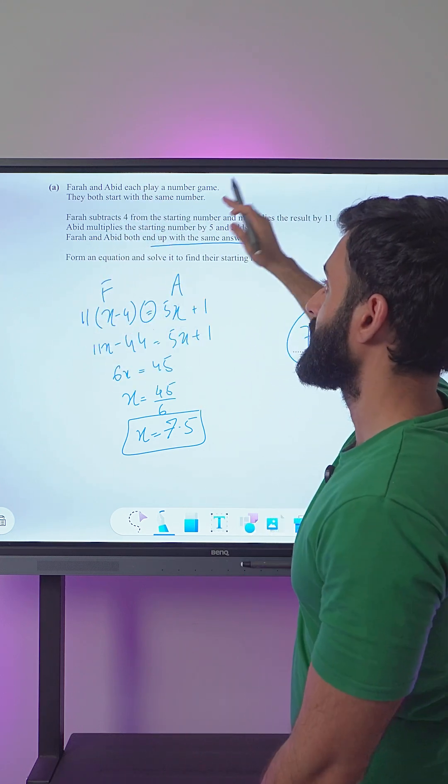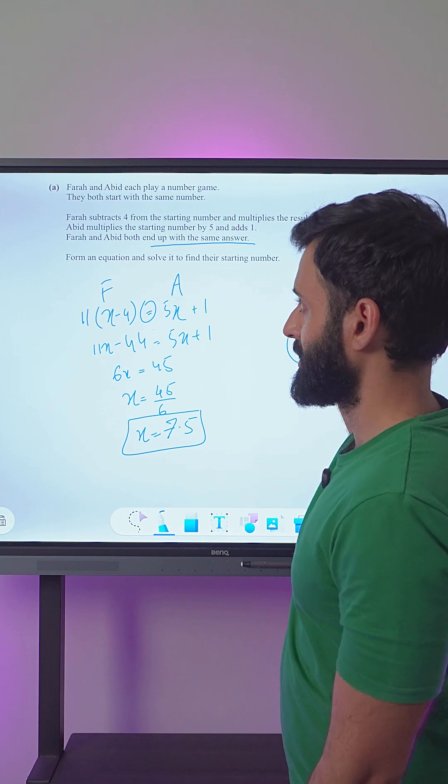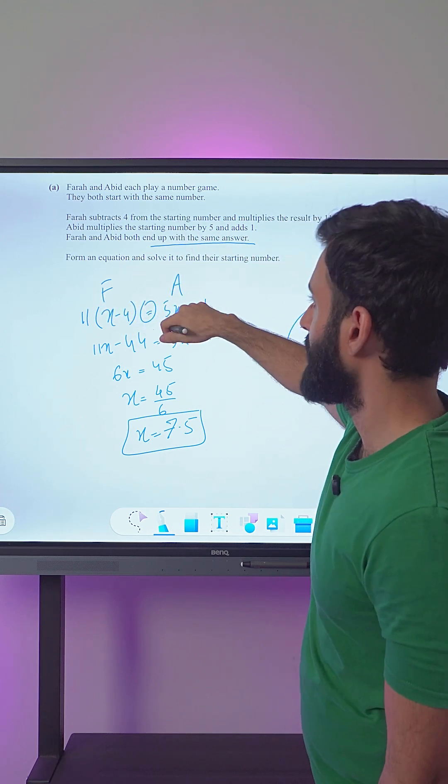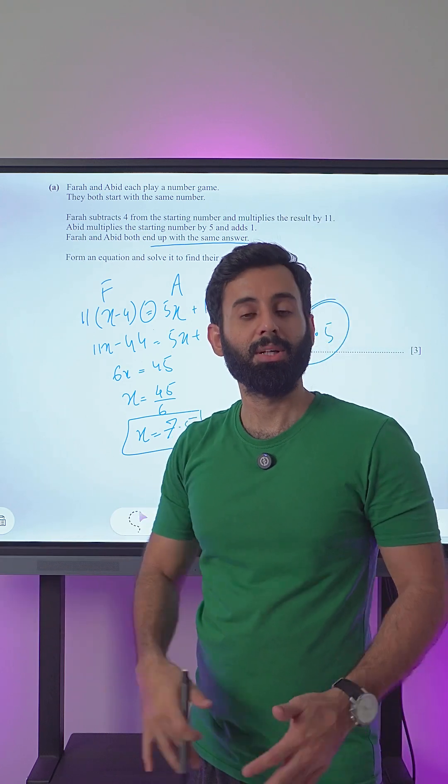And here's what you can do: you can take 7.5 and apply the rules mentioned in the question. That is, subtract 4 and then multiply the result by 11, and do the same for Abid. Take 7.5, multiply by 5, add 1, and see if you get the same answer. If you do, that means this is the correct answer.